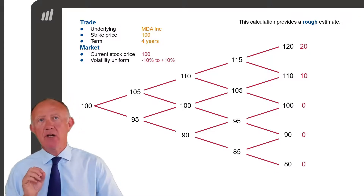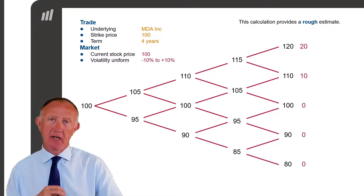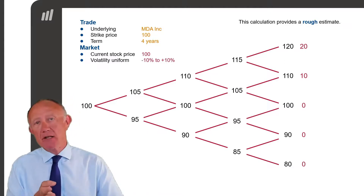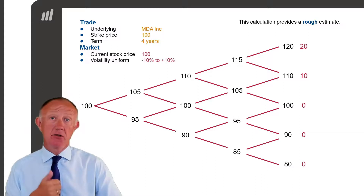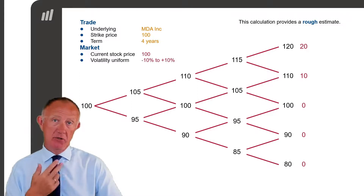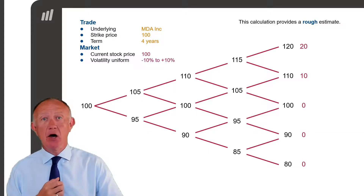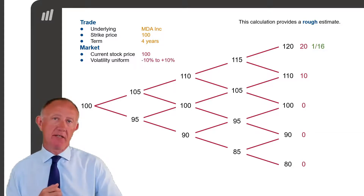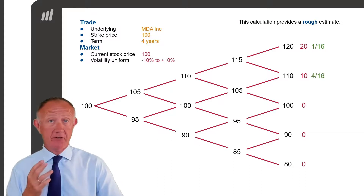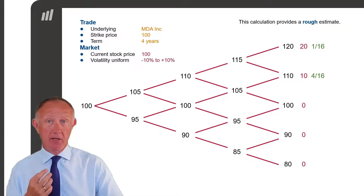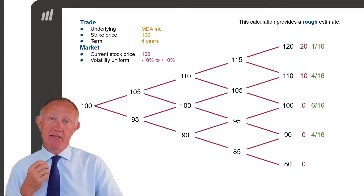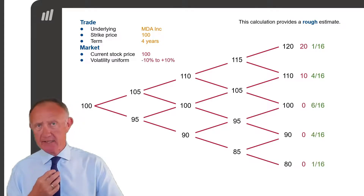Next, we need to think about how likely each of those scenarios is. How likely is the stock price to go up each year for four years? There are 16 possible paths — 2 times 2 times 2 times 2, that's 16. Only one of those leads to the price of 120, so we've got a 1 in 16 chance of hitting that maximum price. 4 out of the 16 paths lead to 110, so we've got a 4 in 16 chance of hitting 110 and making a profit of 10. 6 of the paths lead to 100, and the other paths lead to either 90 or 80, where we wouldn't exercise the option.